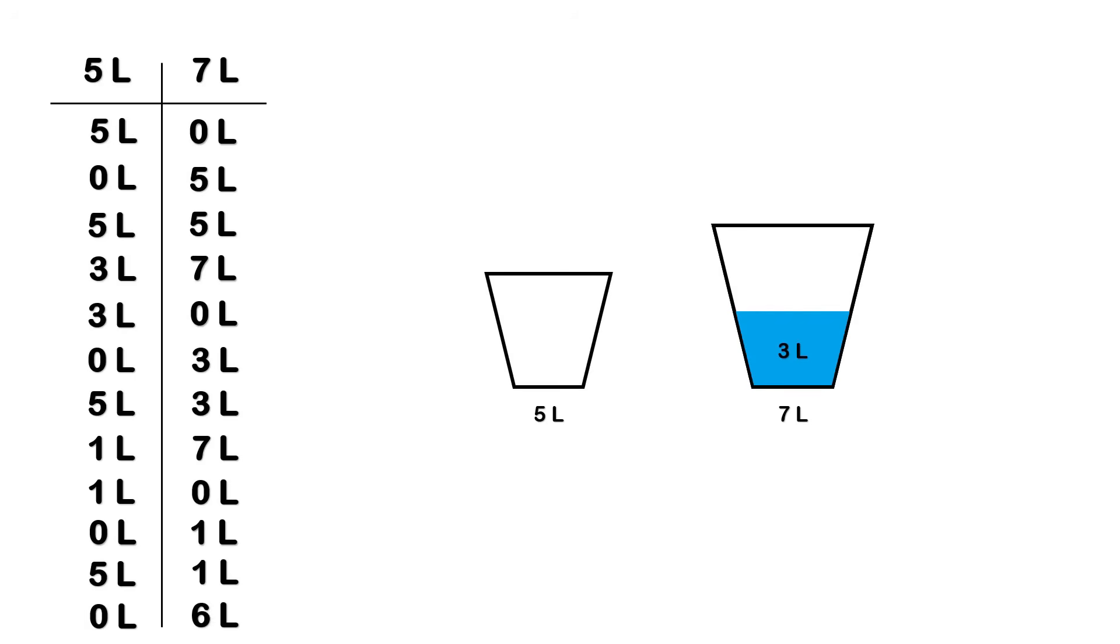After that, we fill the 5-liter bucket again, reaching (5,3). Once more, we pour water from the 5-liter bucket into the 7-liter bucket. 4 liters are transferred, and 1 liter remains in the 5-liter bucket, so we reach (1,7).